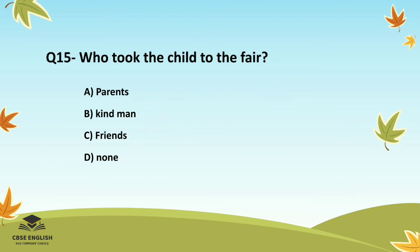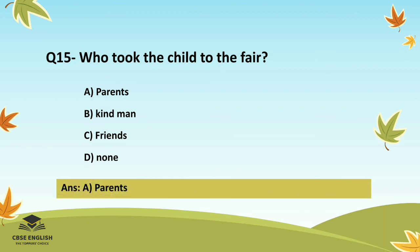Question number fifteen: Who took the child to the fair? Options are: parents; kind man; friends; or none. The correct answer is parents.